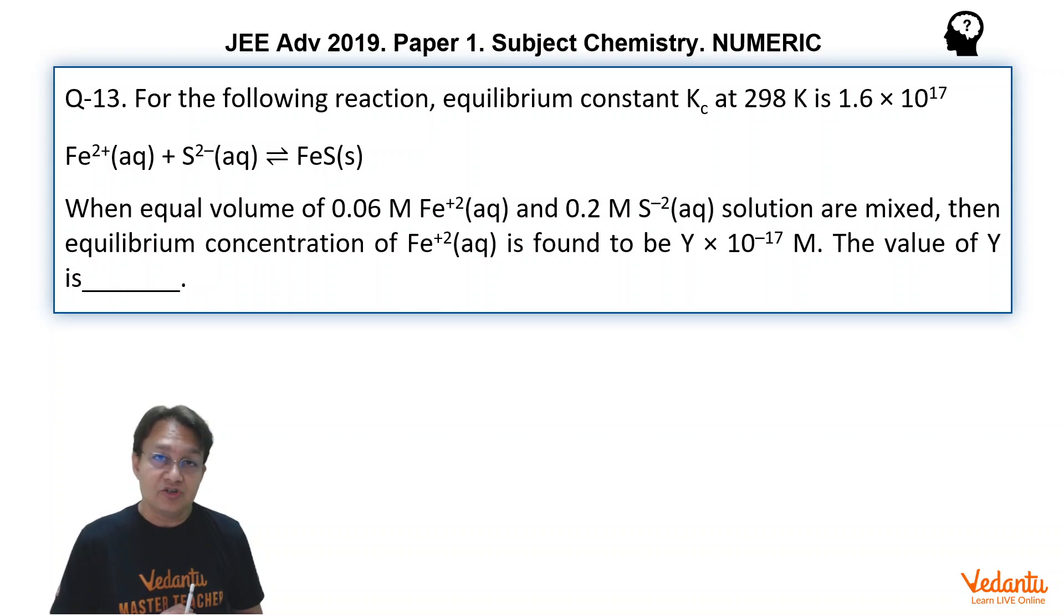Once we determine the initial concentration, looking into this, that the equilibrium constant is very large, it is advisable that we should take this reaction fully to the forward direction, 100% to the forward direction. And then we should take it backward.